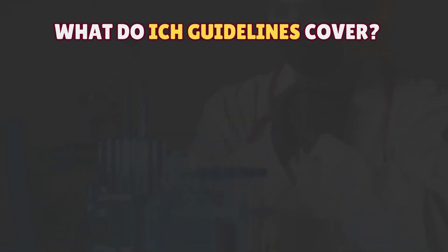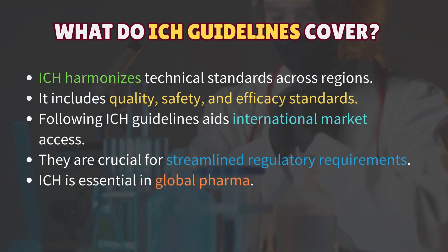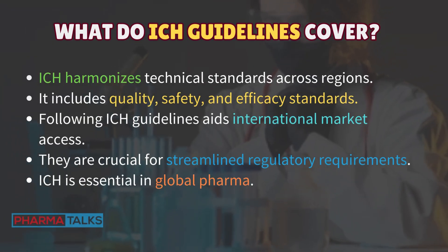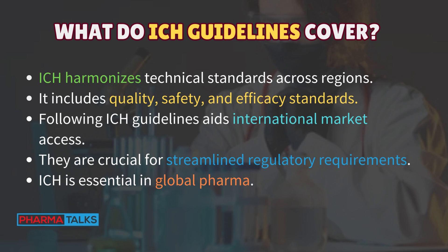What do ICH guidelines cover? ICH harmonizes technical standards across regions. It includes quality, safety, and efficacy standards. Following ICH guidelines aids international market access. They are crucial for streamlined regulatory requirements. ICH is essential in global pharma.